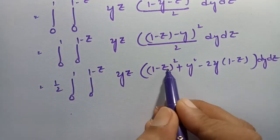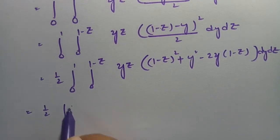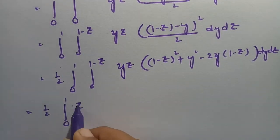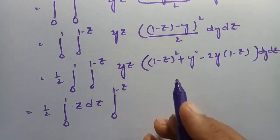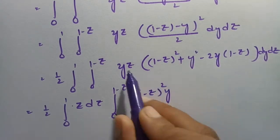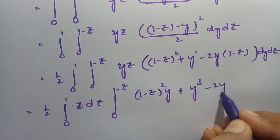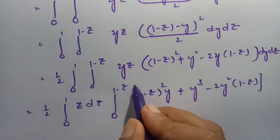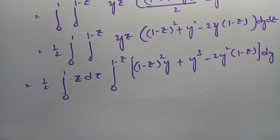Now we have to multiply each term here, so this will be one-half times integral 0 to 1, bringing z outside, times dz and integral 0 to 1 minus z. Multiplying each term with y: this will be y into y squared = y cubed, minus 2y squared into (1 minus z), times dy.